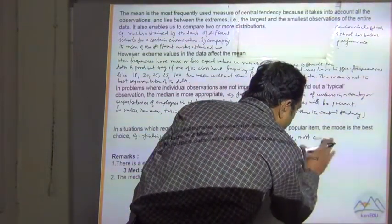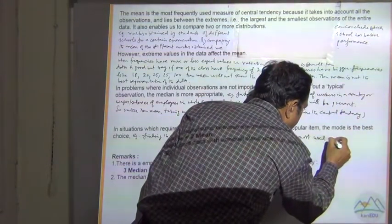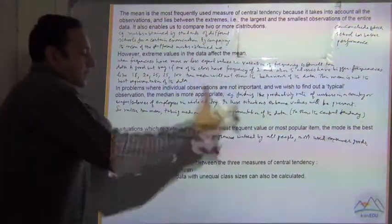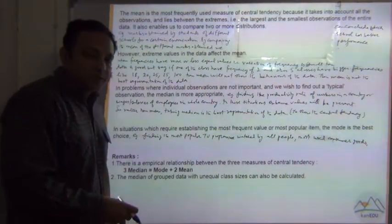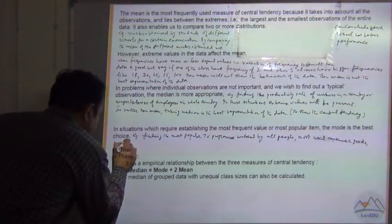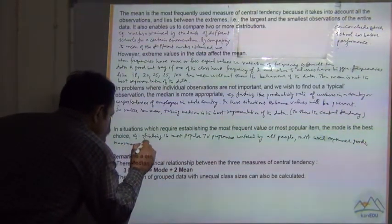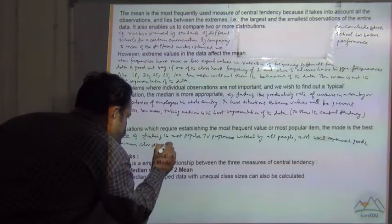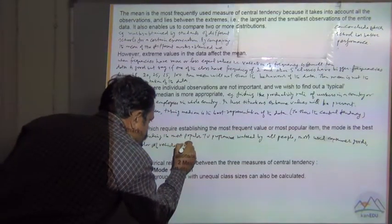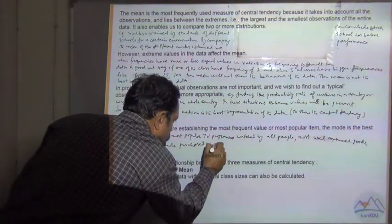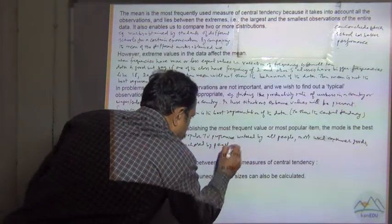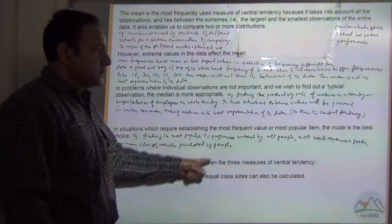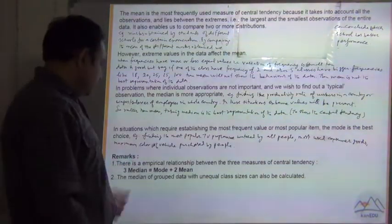Or the most consumer goods, mostly used consumer goods, or the maximum color of the vehicle purchased by people. In this kind of situation, if we have to establish the most frequent value, mode is the best choice.